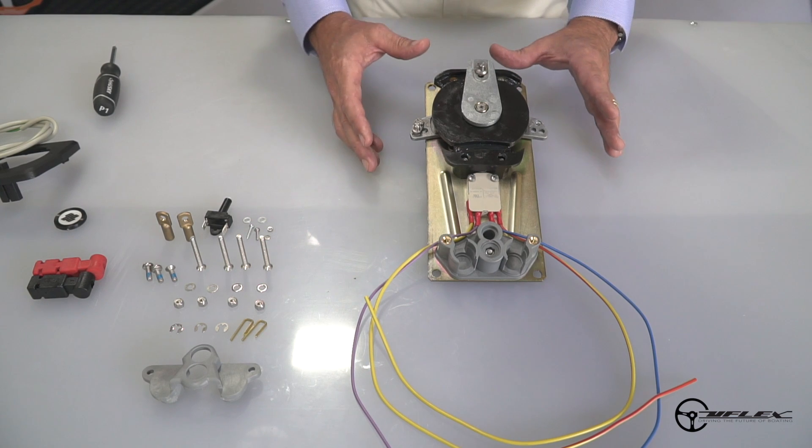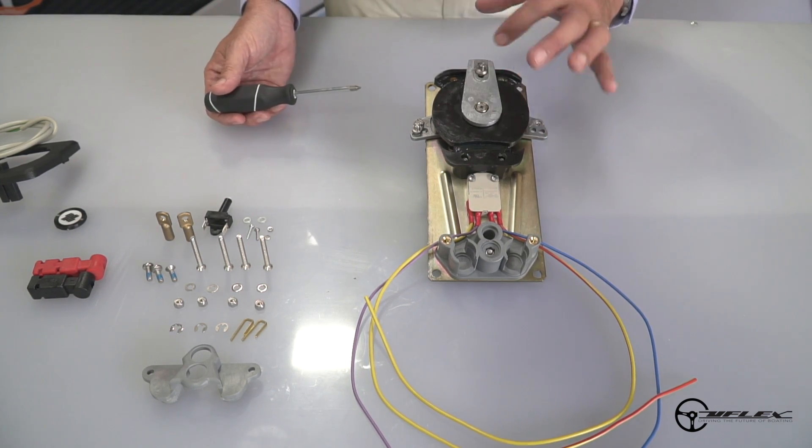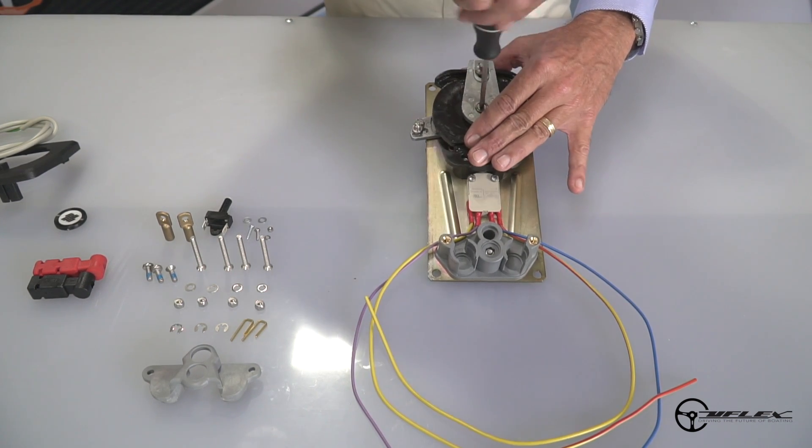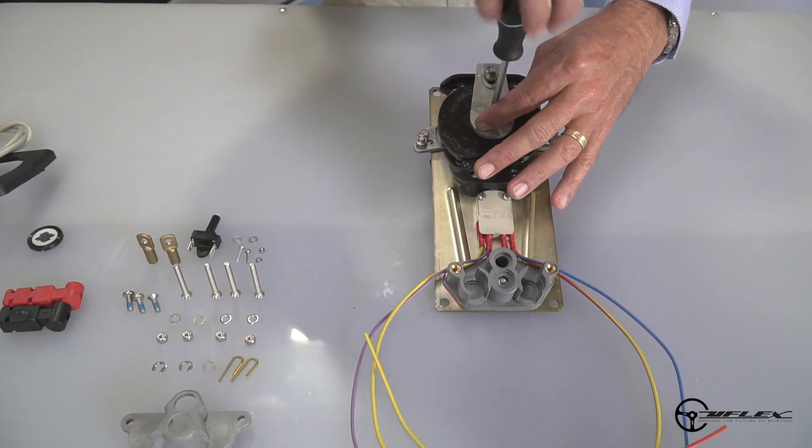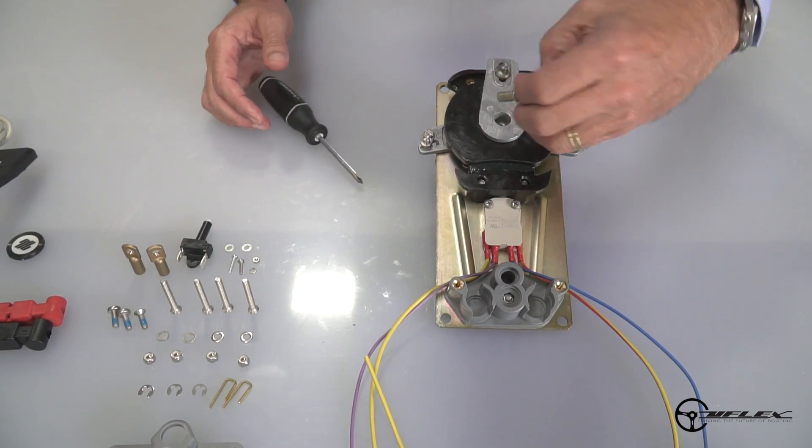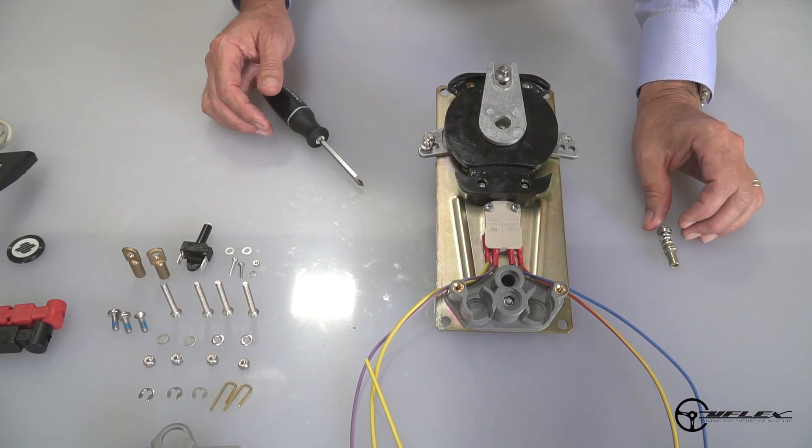However, if it happens to be pull for throttle, I've got to take an extra step here and reorientate the throttle cam to a pull for throttle condition. To do that, I'm going to simply unscrew this retaining screw and the appropriate spring, making sure to maintain the spring and the screw all as one assembly.